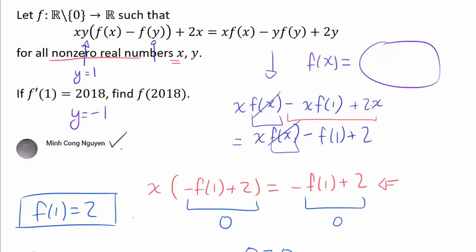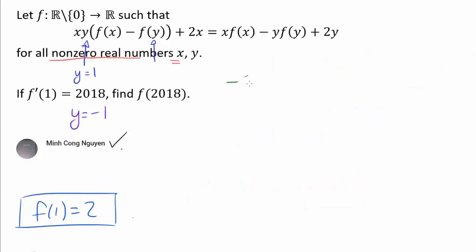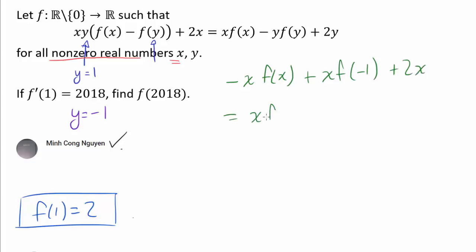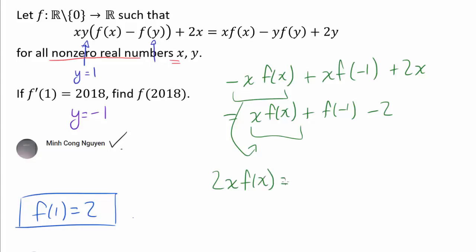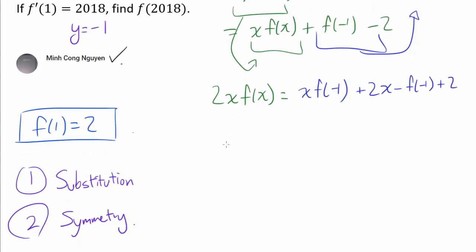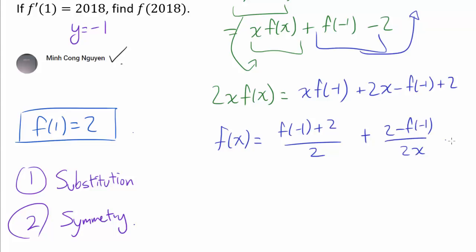Setting y = −1 gives: −x·f(x) + x·f(−1) + 2x = x·f(x) + f(−1) − 2. Rearranging to collect f(x) terms: 2x·f(x) = x·f(−1) + 2x − f(−1) + 2. Dividing by 2x gives f(x) = (f(−1) + 2)/2 + (2 − f(−1))/(2x).